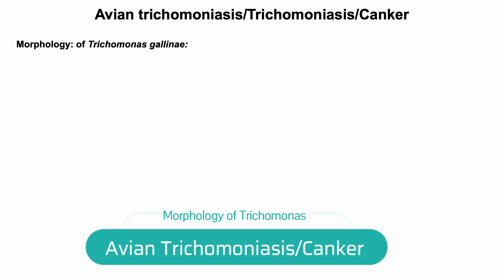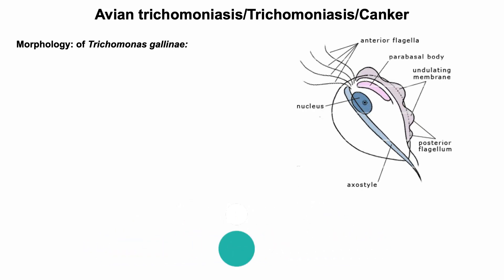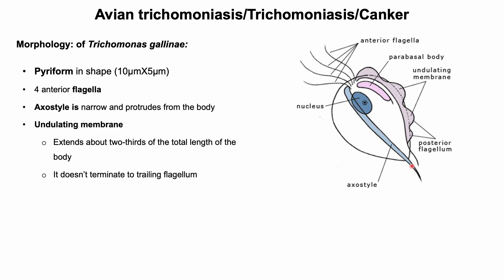Morphological features of Trichomonas gallinae: it is pyriform in shape. There are four anterior flagella and one undulating membrane. The undulating membrane does not terminate to the trailing flagellum. The axostyle is narrow and protrudes from the body.